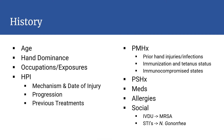A focused history is taken to identify the etiology and risk factors for the infection. The history should include the patient's age, handedness, and occupation. The HPI includes the mechanism and date of injury, progression, and previous treatments. A full past medical history including prior hand injuries, infections, and immunization status should be reviewed, including tetanus status.